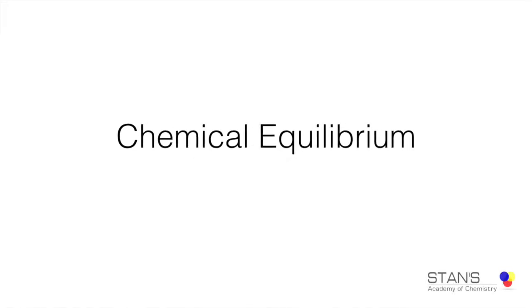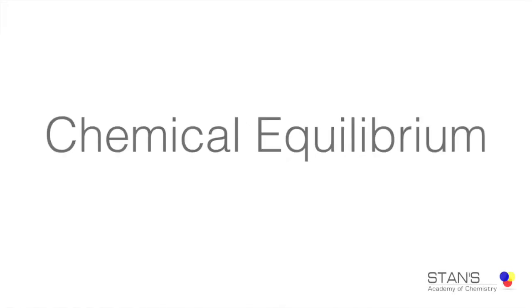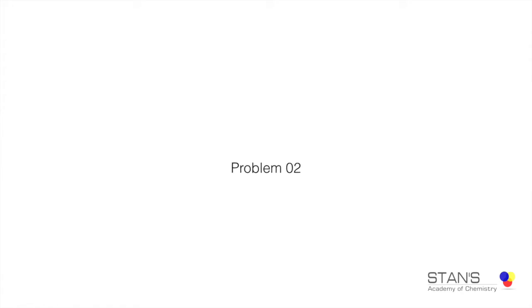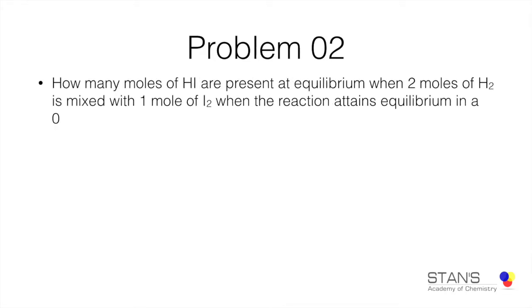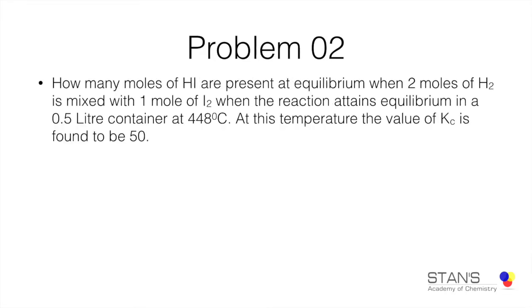In this video, we will be solving a problem on chemical equilibrium for the reaction between hydrogen and iodine to produce hydrogen iodide at 448 degrees Celsius in a 0.5 liter container. The number of moles of hydrogen is 2 moles, the number of moles of iodine is 1 mole, and the equilibrium constant for the reaction is given as 50.